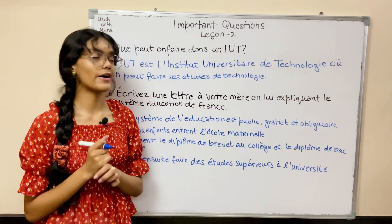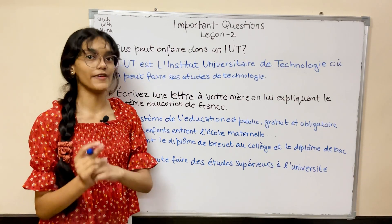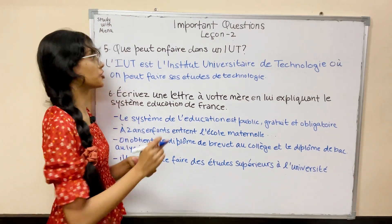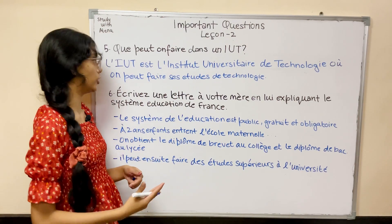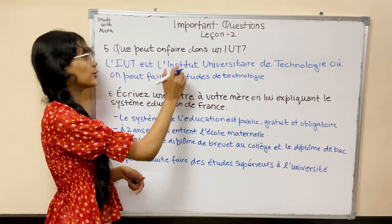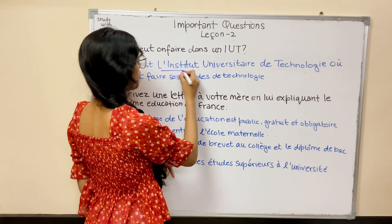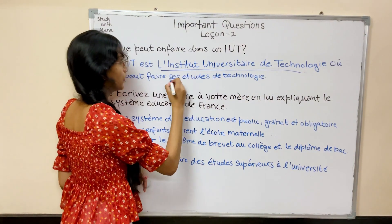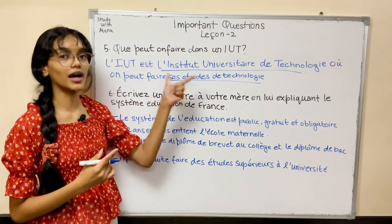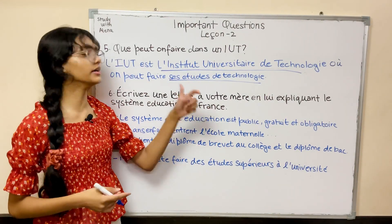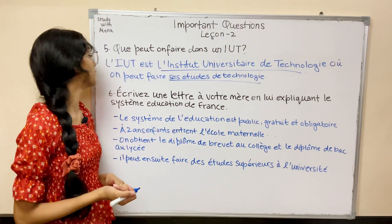The next question is: Que peut-on faire dans un IUT? This is a very important question — you must know the full form and what we can do there. L'IUT est l'Institut Universitaire de Technologie, où on peut faire ses études de technologie. Very direct, but a very repeated question from the subjective part.